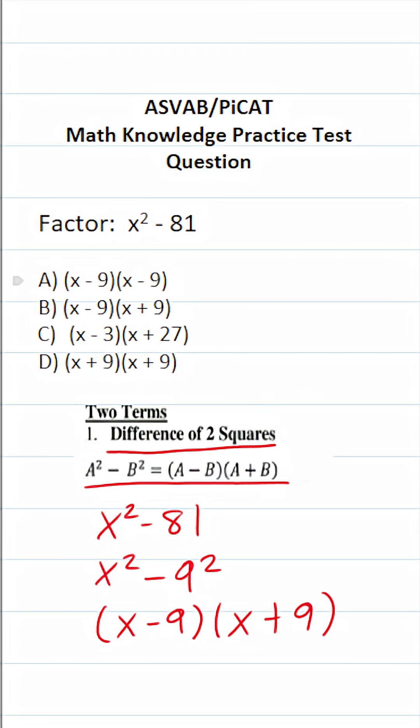So the answer to this one is B, of course. There's really no other math involved other than recognizing that this is the difference of two squares. And as such, your solution is going to look like this. All right, so that is that one.